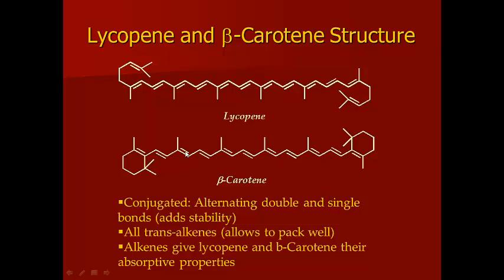Whenever you see the pattern of alternating double and single bonds — double, single, double, single, double — that's called a conjugated system. Any time a system is conjugated, it's going to be a little bit lower in energy than a system that is not conjugated.